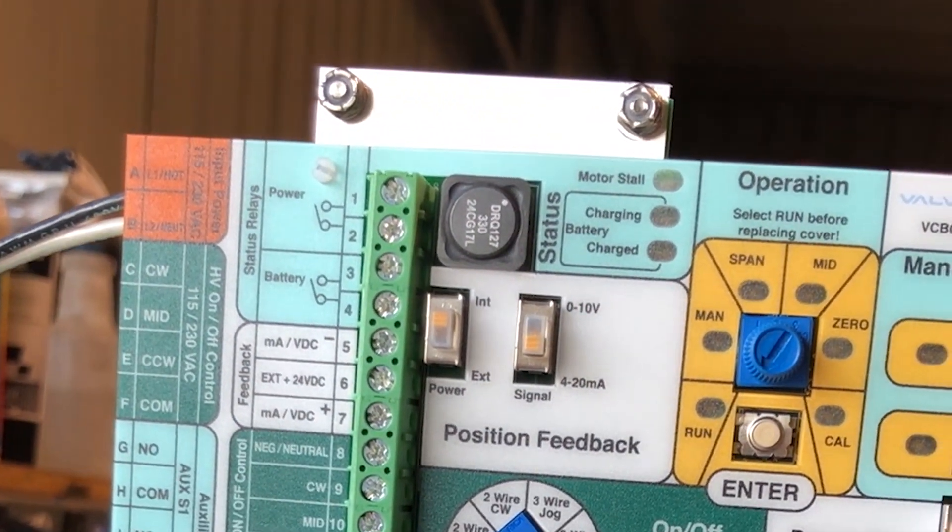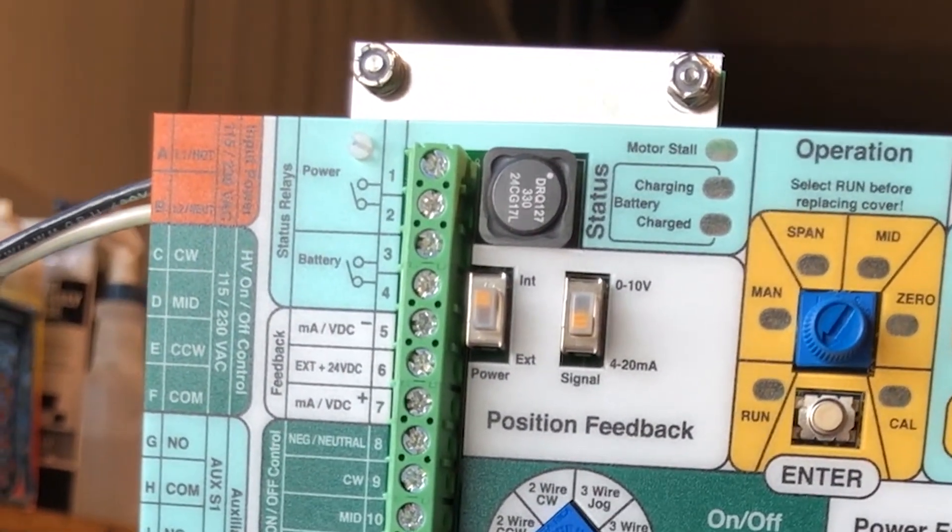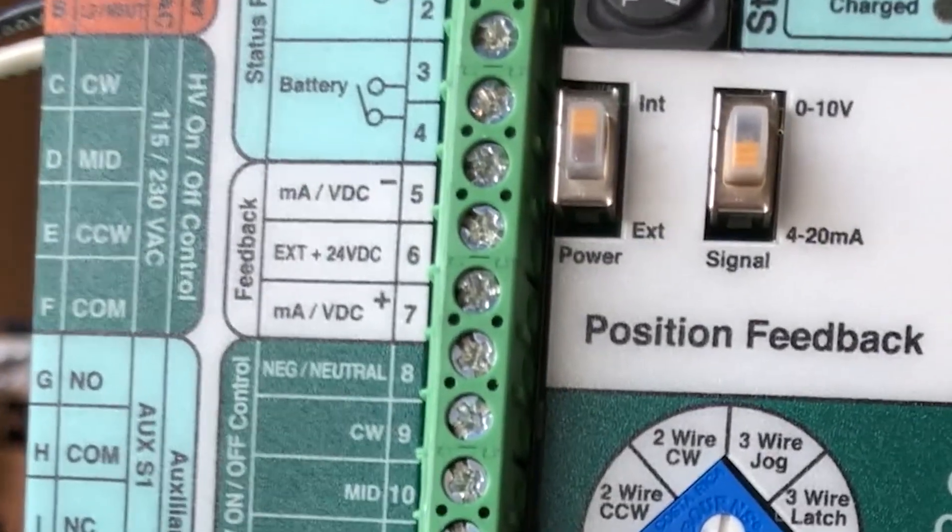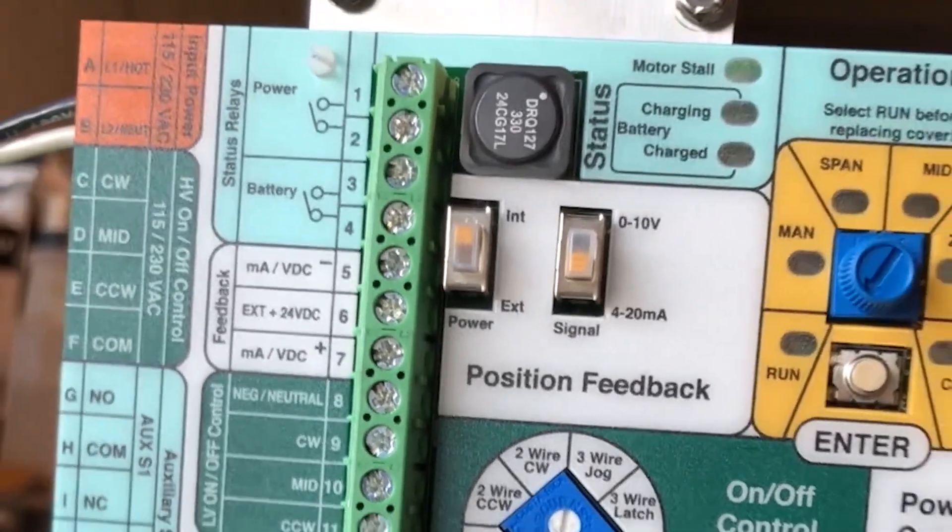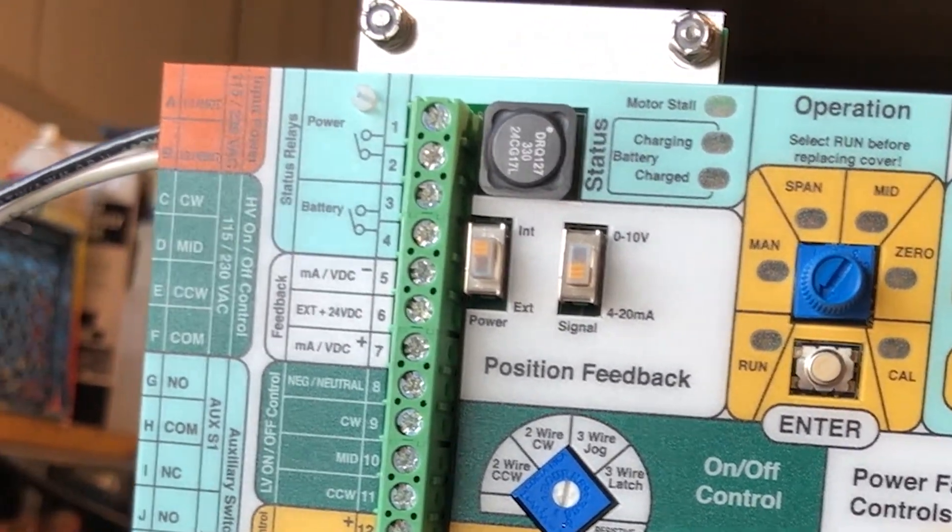Next we're going to wire in our milliamp feedback signal, which is terminals five and seven on the board, five negative and seven positive.